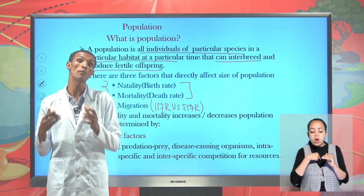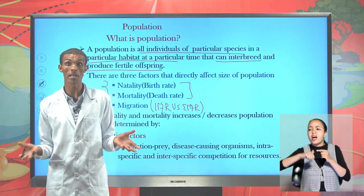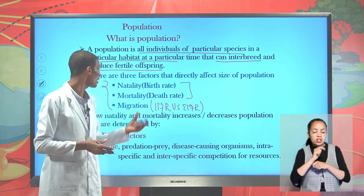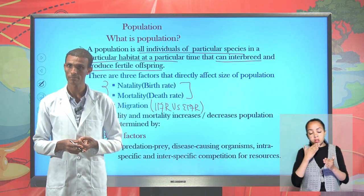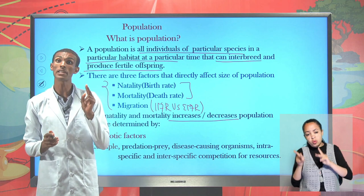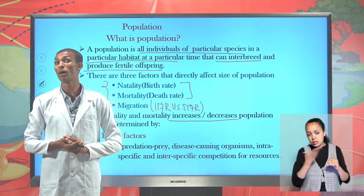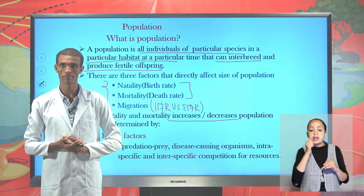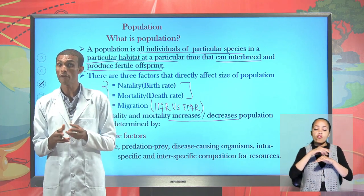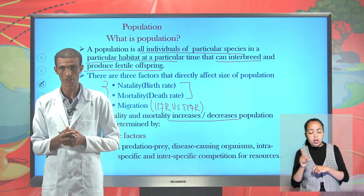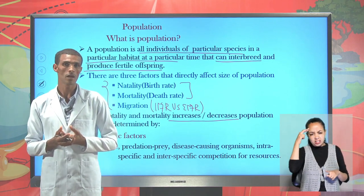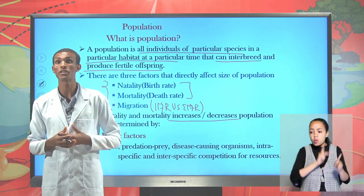If we are moving from Ethiopia to Canada or America, we are never going anywhere — we are moving within a globe — so migration may not affect global population, but can affect local population size. Whether mortality or natality increases or decreases population size can be determined by two main factors: biotic factors and abiotic factors.